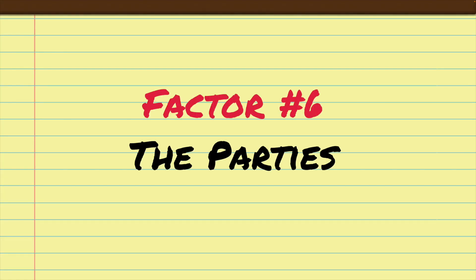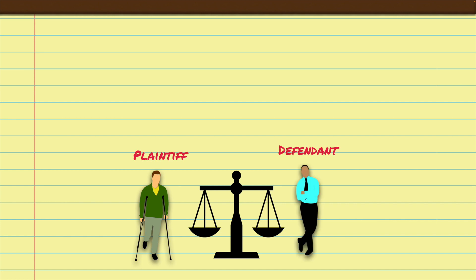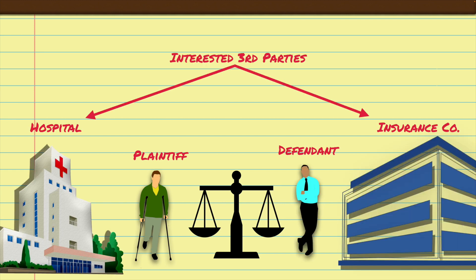Today we're covering factors number six and seven. Factor number six is the parties to the case. A party to a personal injury claim means the plaintiff, the defendant, or some third party that has an interest in the outcome of your case, like an insurance company. The plaintiff is the person bringing the claim. The defendant is the person who is allegedly responsible for the injury and they are defending against the claim.